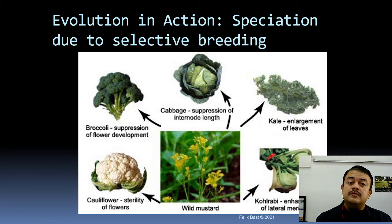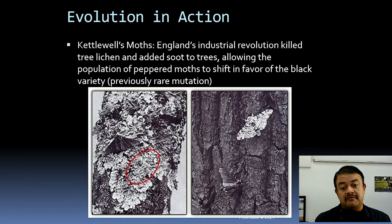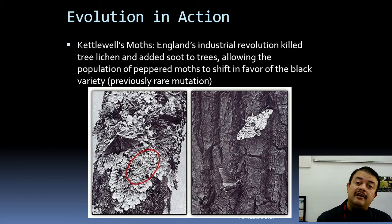Vegetables like cauliflower, broccoli, cabbage, kale, and kohlrabi are actually all one species — Brassica oleracea, the wild mustard species — all products of selective plant breeding through artificial selection.